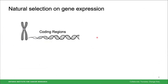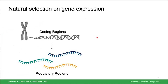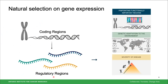Natural selection has been very well characterized in our DNA, specifically when looking at coding regions of our genome. However, we're only beginning to understand the role of selection on gene expression variability. This characterizes a whole new avenue of our genome, including regulatory regions, and is going to enhance our understanding of how evolution is shaping our regulatory genome.